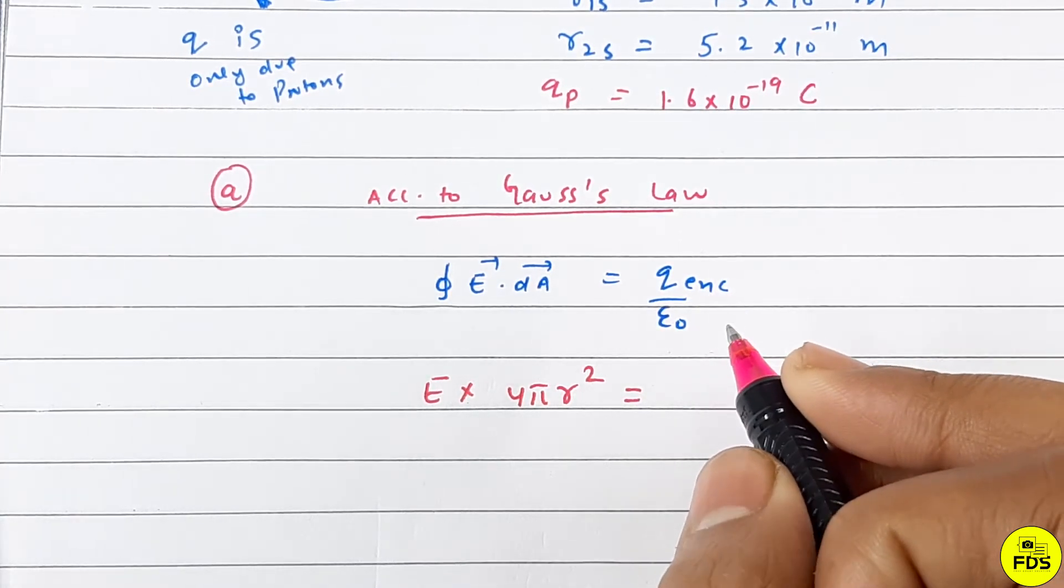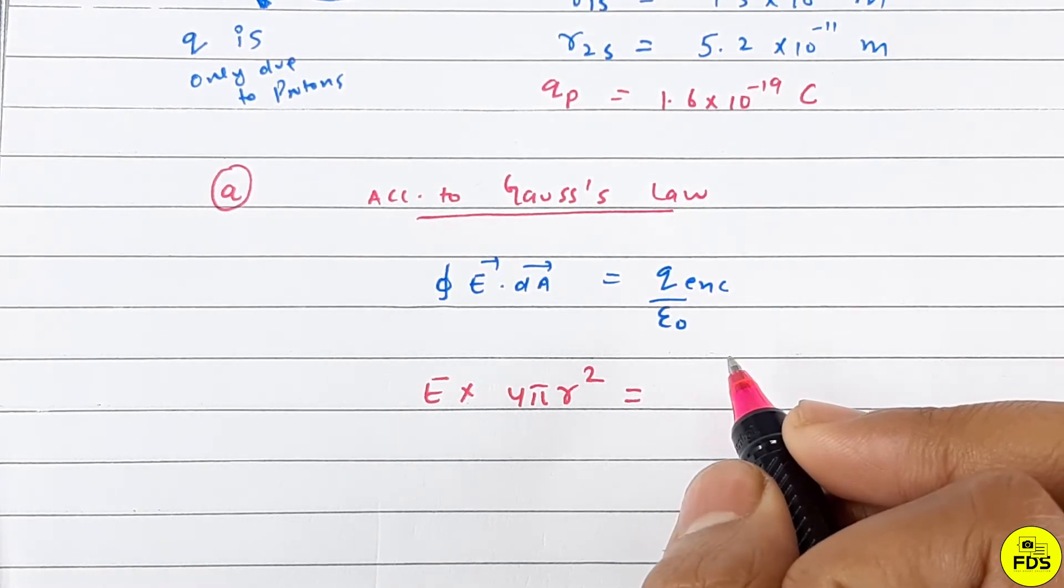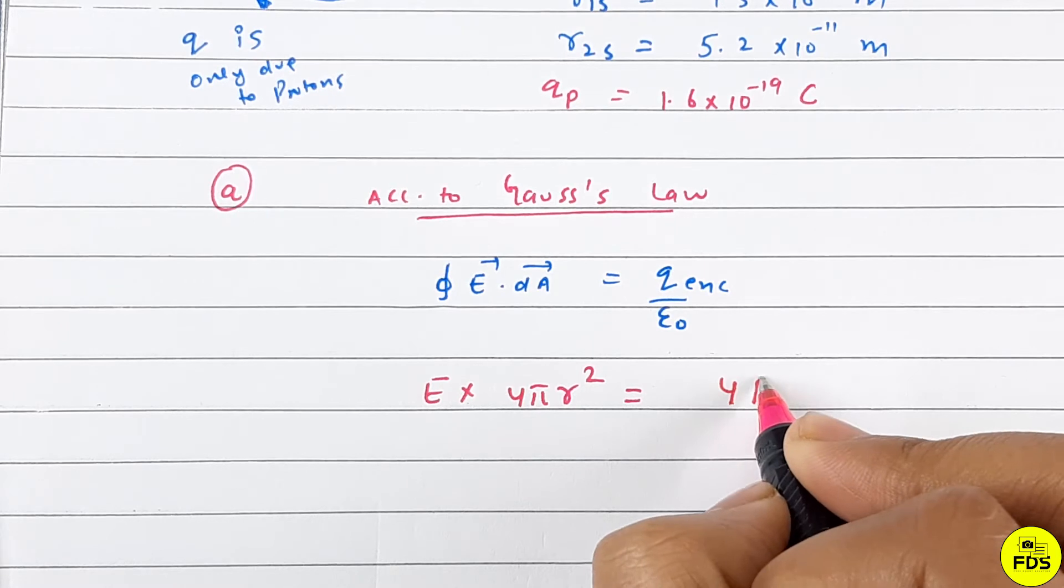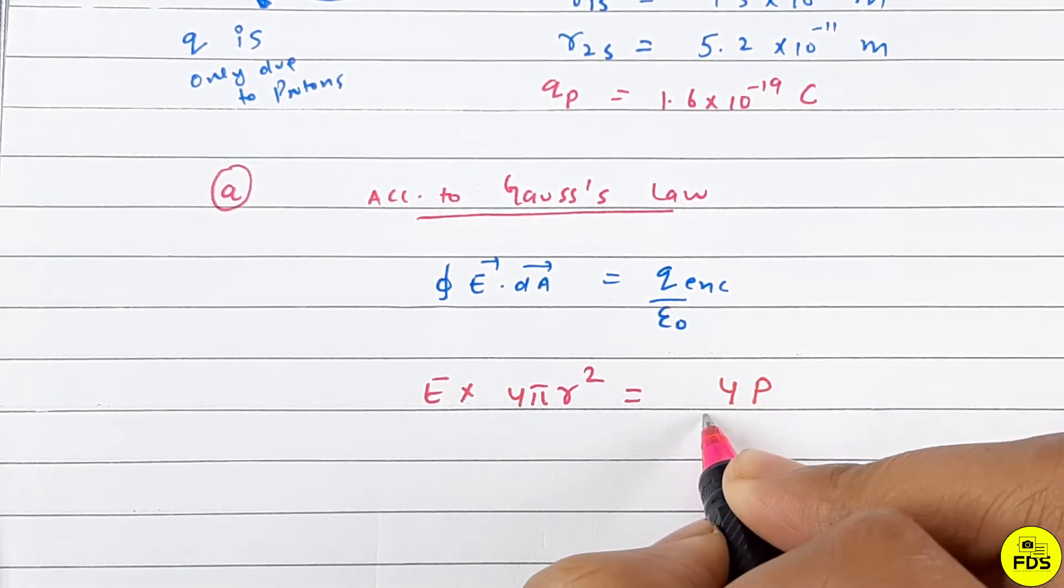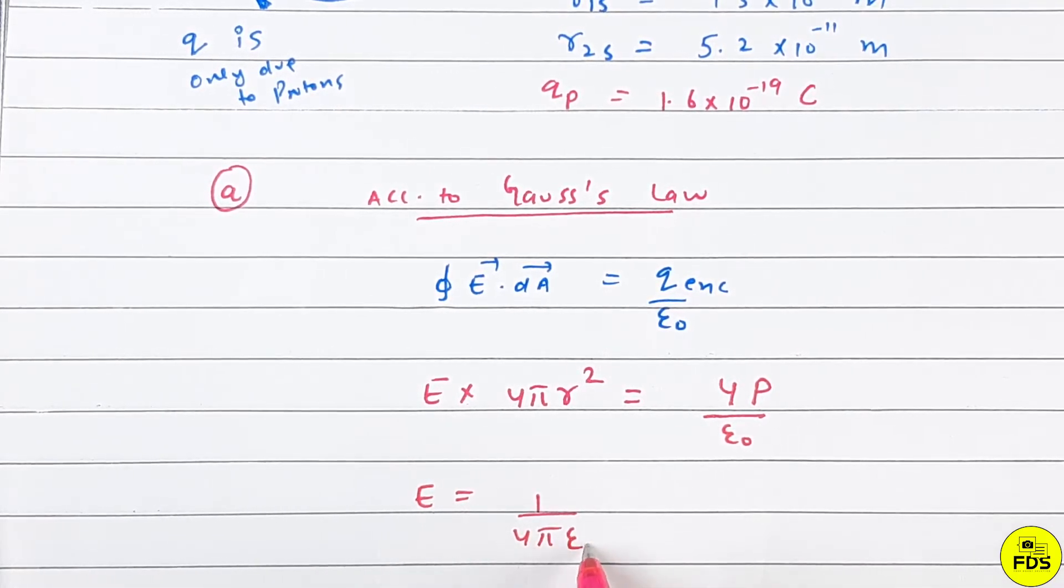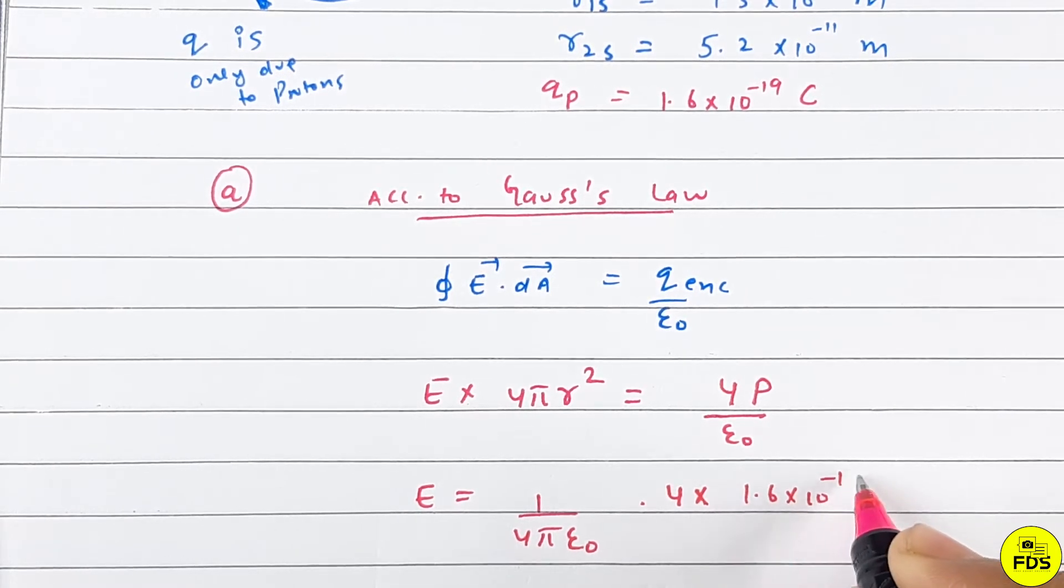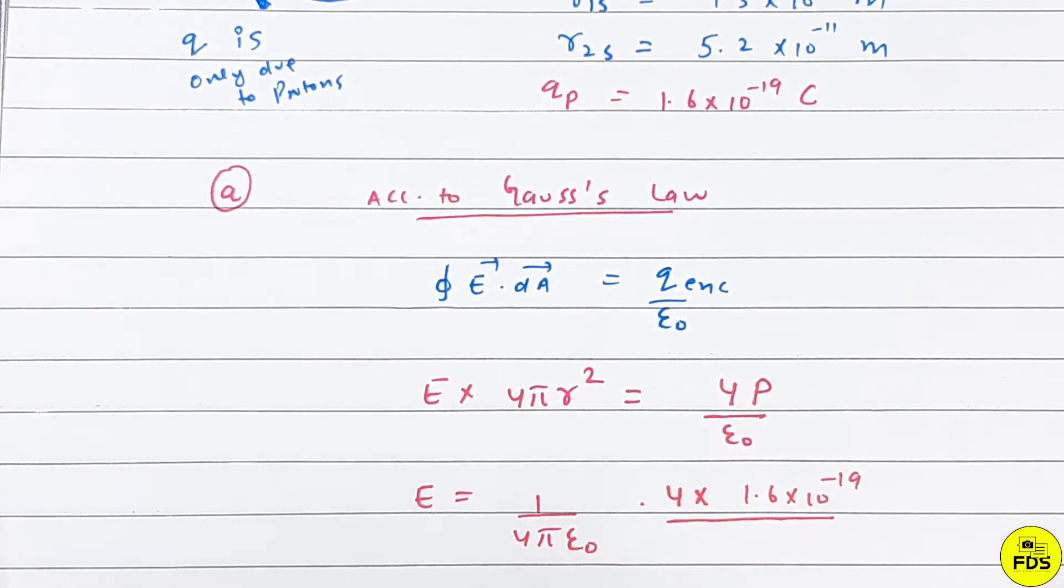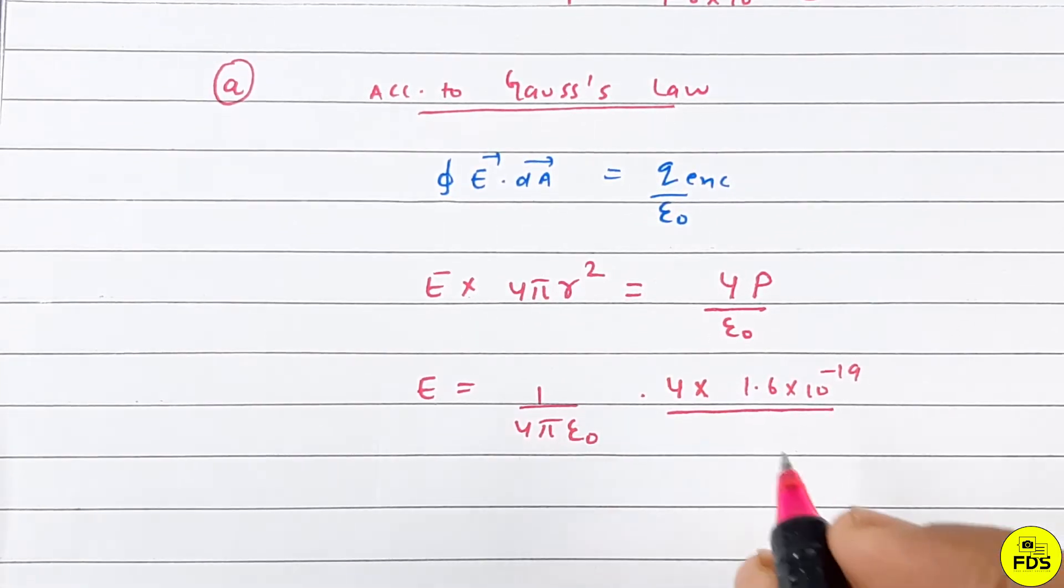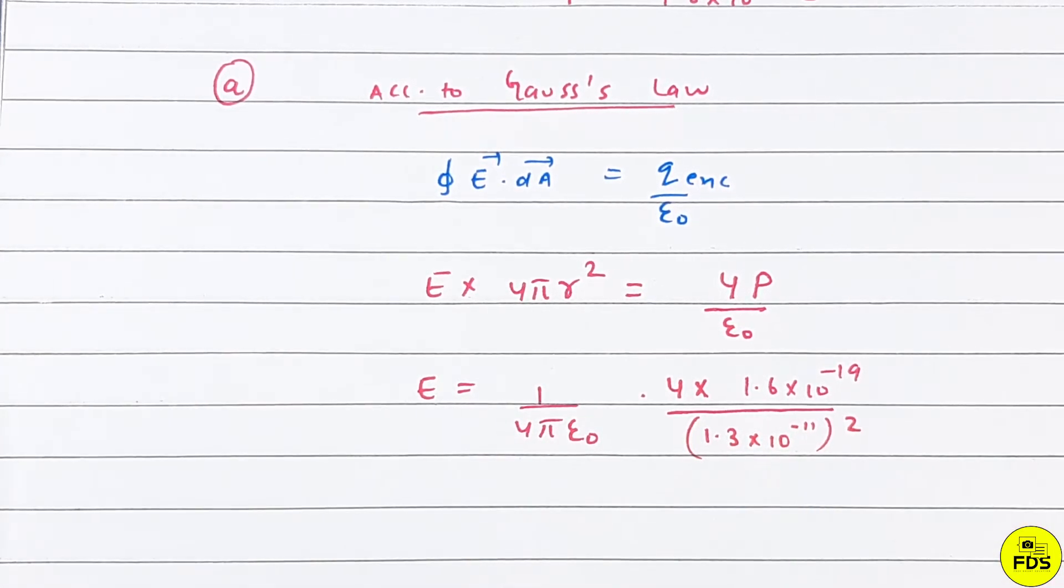Inside the 1s cloud, the charge is only from the protons, so it's 4p for four protons. Using 1/(4π epsilon naught), which equals k, we have E = kq/r². Here q is 4 × 1.6 × 10^-19 and r is 1.3 × 10^-11.